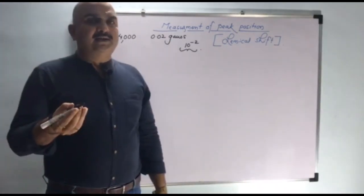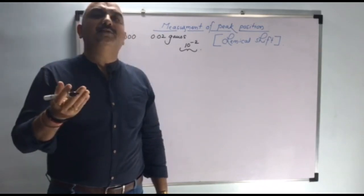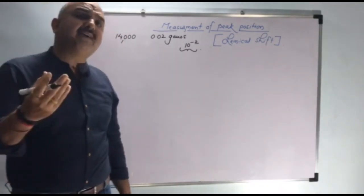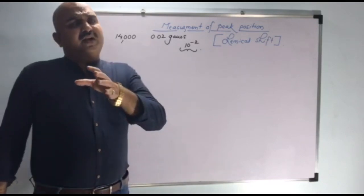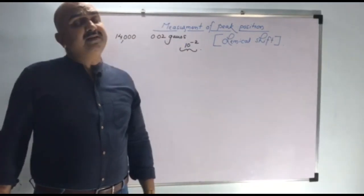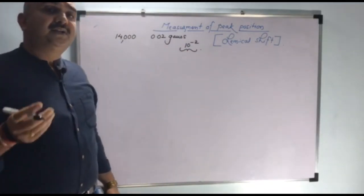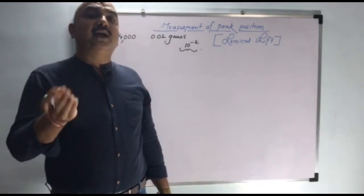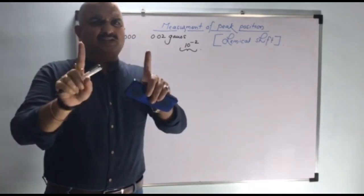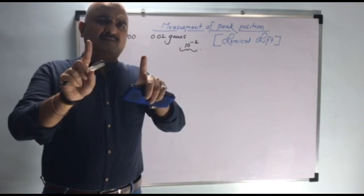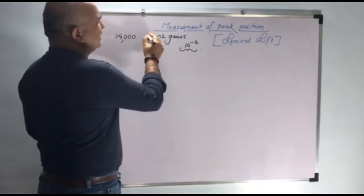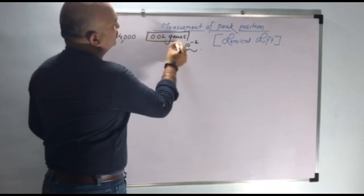We know that non-equivalent protons absorb at different magnetic fields — they will resonate at different magnetic fields. So if we are having a list of different sets of protons, sometimes two sets of protons have an absorption difference that is very, very small. Consider two sets of protons where the difference in magnetic field absorption is around 0.02 Gauss.